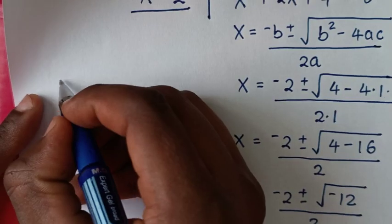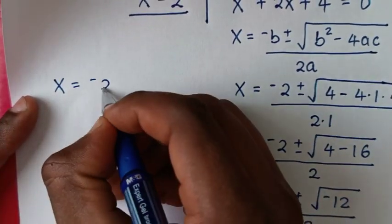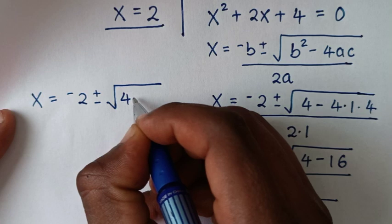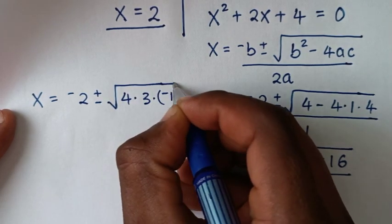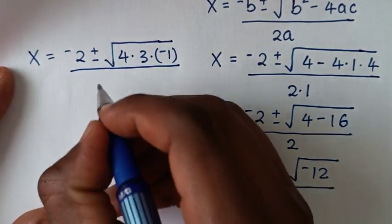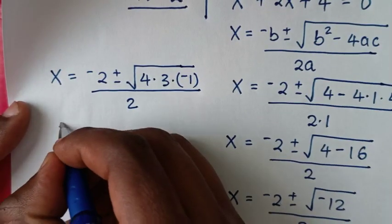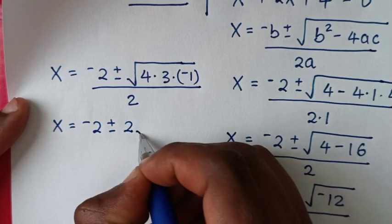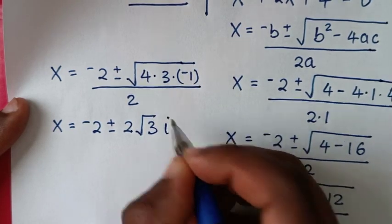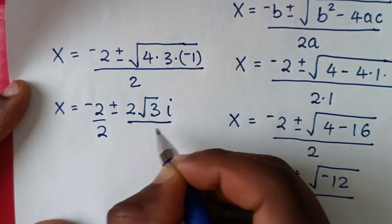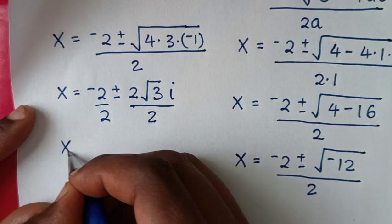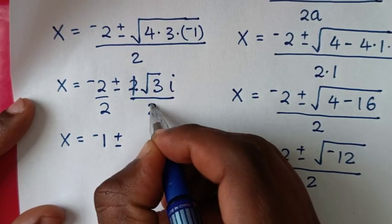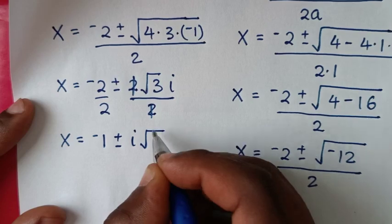From here, x equals negative 2 plus or minus the square root of negative 12, which is the same as the square root of 4 times 3 times negative 1. In the next step, x equals negative 2 plus or minus the square root of 4 — which is 2 — times square root of 3, times square root of negative 1, which is i. Dividing both parts by 2, x equals negative 1 plus or minus i times the square root of 3.